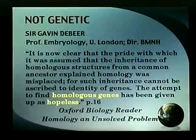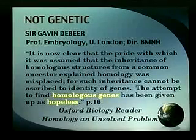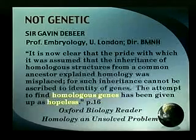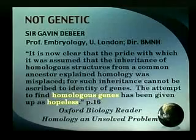Totally different genetics producing these hand-like structures. And so De Beer says there's no such thing as homologous genes. He continues, saying the attempt to find homologous genes has been given up as hopeless. But if that similarity is not genetic and doesn't come from common genes, then we've got to look for another explanation. I think we have one.